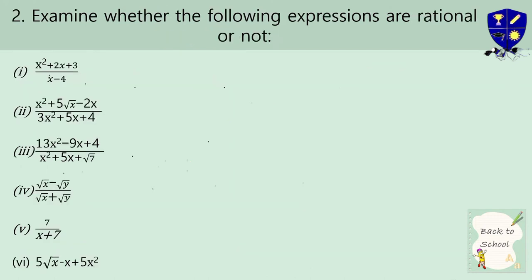Number two: examine whether the following expressions are rational or not. Now we will determine whether the expressions are rational. The first expression is already written in P by Q form, which indicates that it is rational. So write: rational.